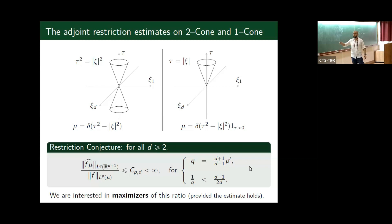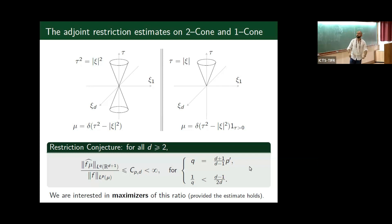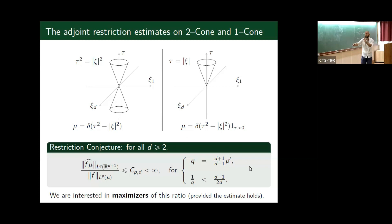We have two parameters: the dimension of space and the exponent P. The problem of sharp Fourier restriction theory is: what are the maximizers of this ratio? Suppose we know the estimate holds, so there is a finite constant and this ratio makes sense. What is the maximum of this ratio, and even more interestingly, what is the f that achieves this maximum?